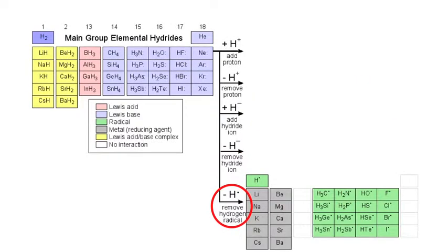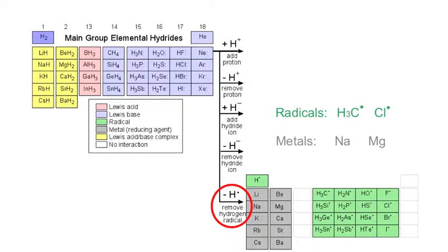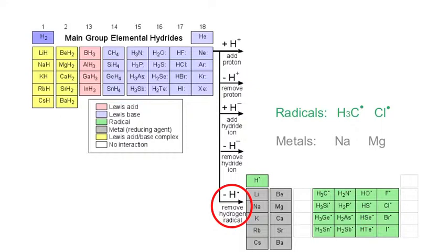Finally, we remove hydrogen radical H•. These give the radicals, but the saline hydrides give the metals. For example, removing H• from lithium hydride gives us lithium metal.